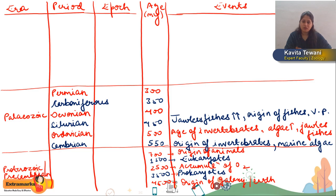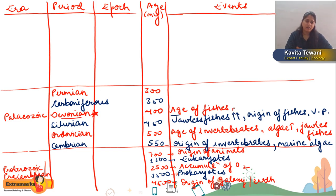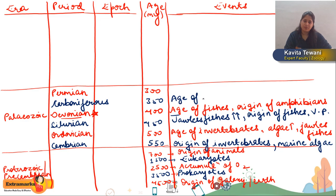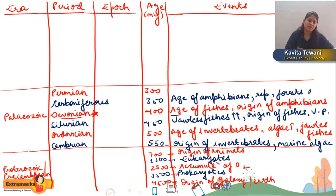Devonian is considered the Age of Fishes because the number of fishes increased. Origin of amphibians was also seen here. Carboniferous is called the Age of Amphibians, and origin of reptiles was seen. Forests of vascular plants were also seen.